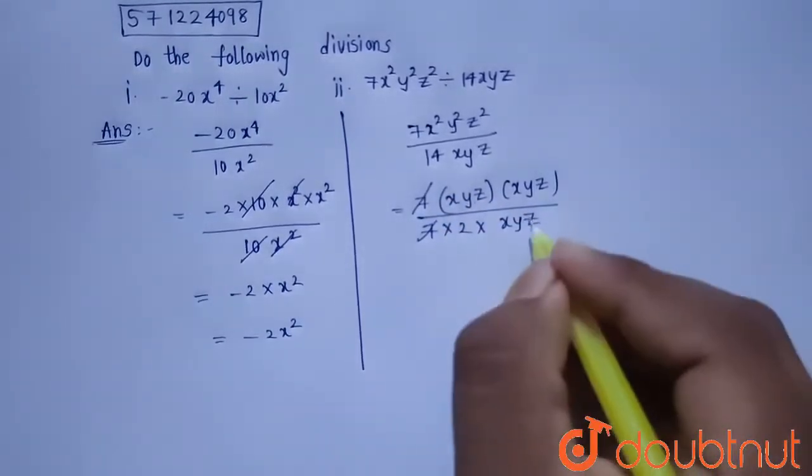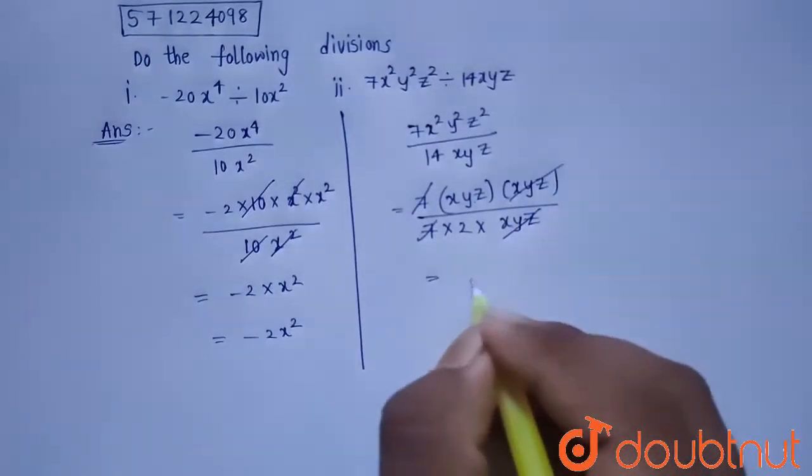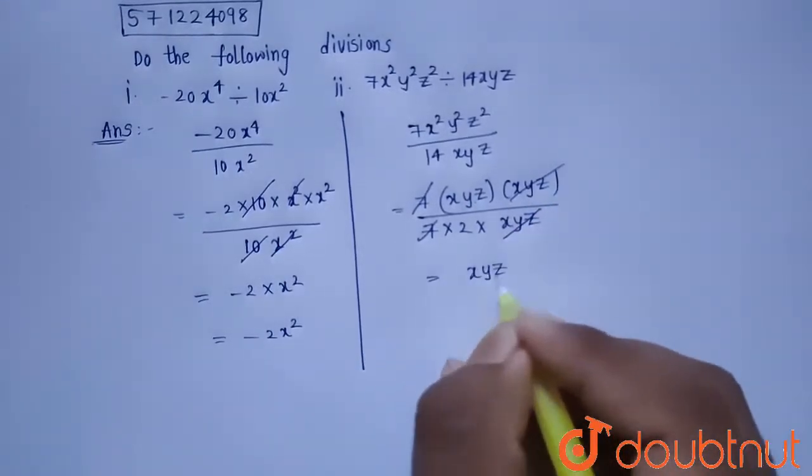Now this 7 will get cancelled, and this x y z will get cancelled. We will be left with x y z by 2.